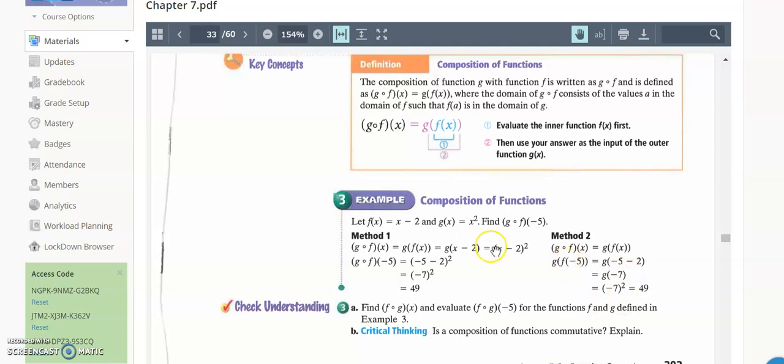For instance, F of negative 5. Let's go find F. There it is. Let's put a negative 5 in right here and right there, and we're going to get negative 7. And you can see they get that right there.